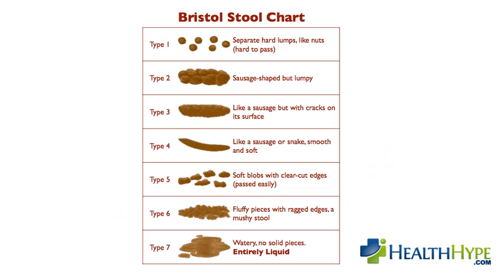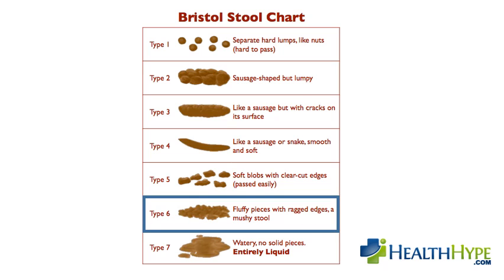Apart from the quantity of stool and frequency of bowel movements, the form of the stool also needs to be considered for the definition of diarrhea. According to the Bristol stool chart, diarrhea stool is mushy or watery, as indicated by type 6 and type 7 on the chart.